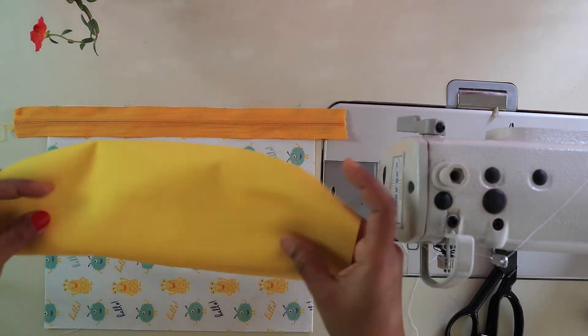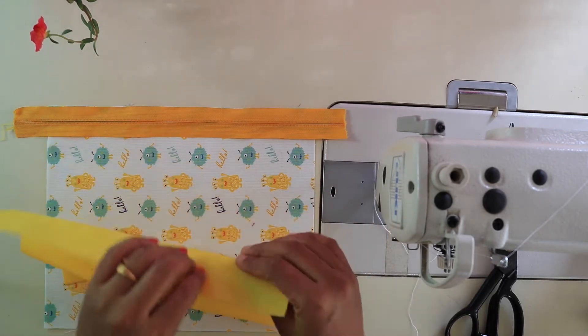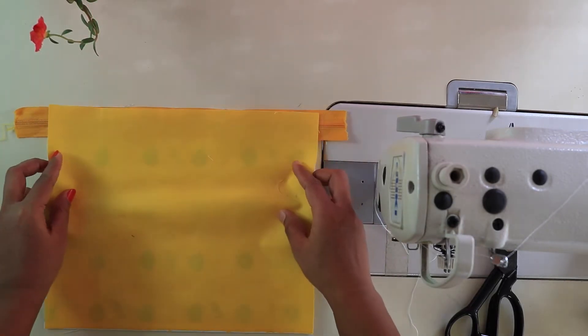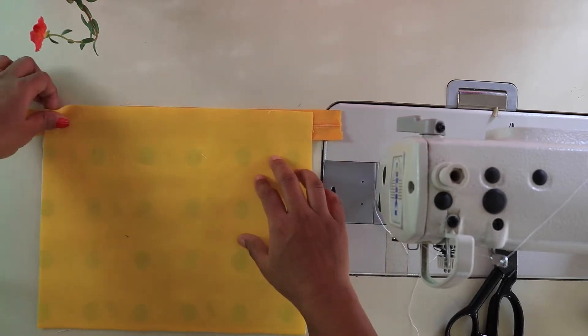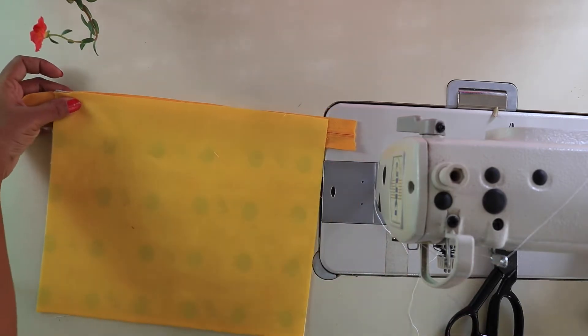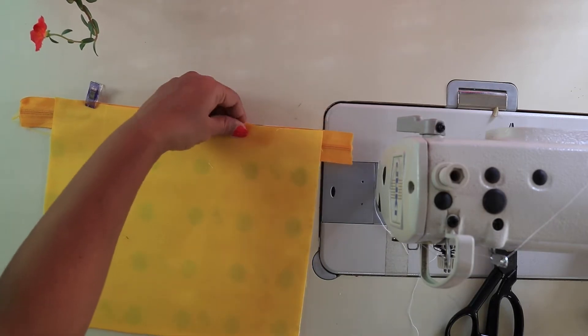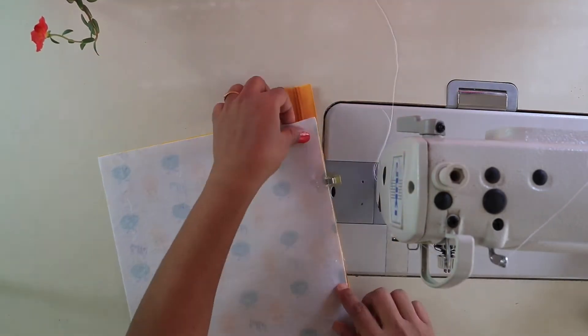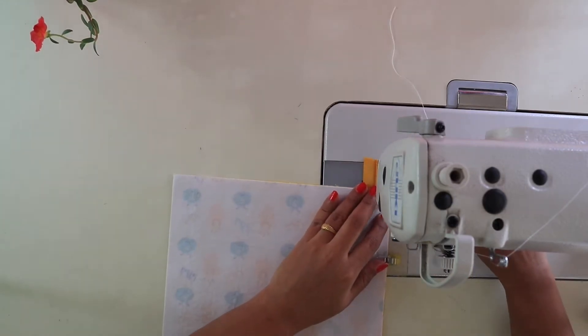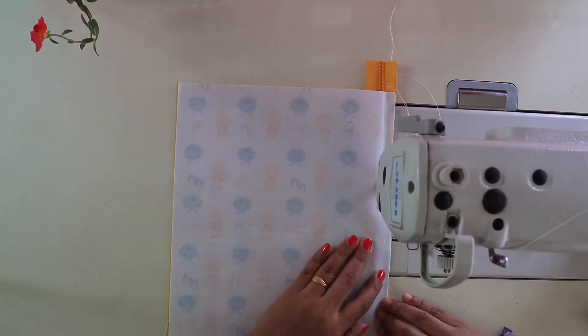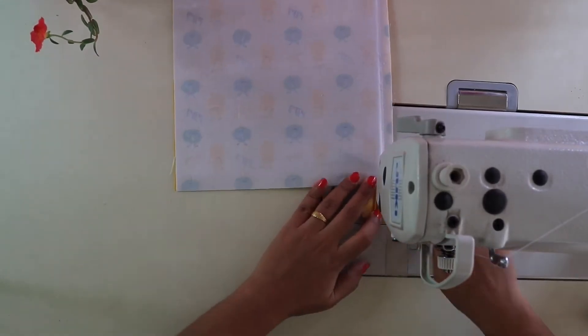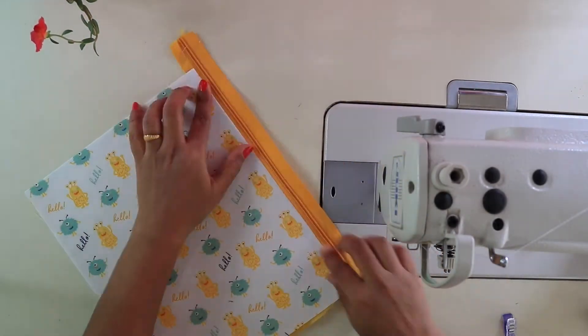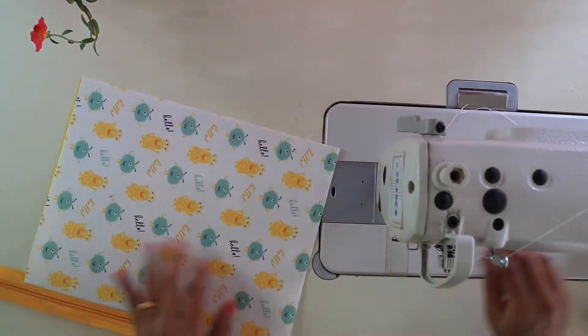Lastly, place the lining fabric with right side facing down toward the zipper. Align all three together and pin. Then make a stitch all the way down to attach zipper. Open the fabric and finger press the seam and make a top stitch.